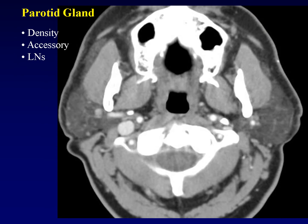The density of the parotid gland varies during our lifetime. In children, the parotid gland will be just as dense as the underlying masseter muscle. In older adults, there is so much fatty atrophy in the gland that it becomes almost identical in attenuation to the overlying fat. But in most people, it's somewhere in between, and can be distinguished from both the muscle and the fat.